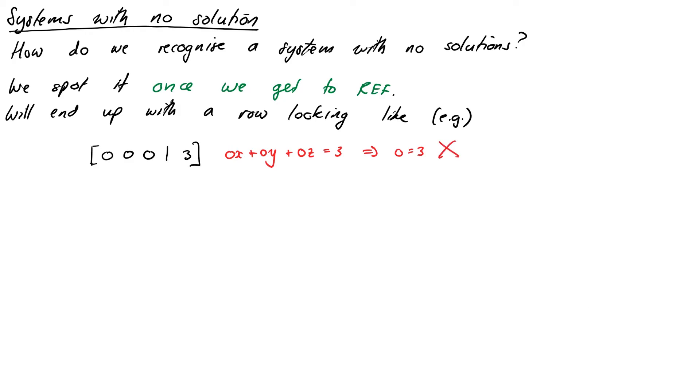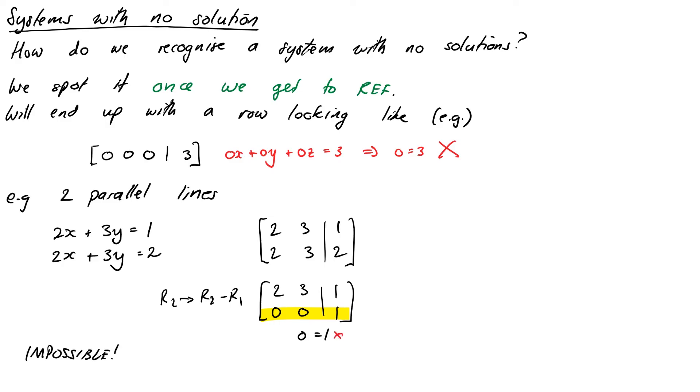So maybe we'll look at one that we understand. Let's look at an example in 2D of two parallel lines. So 2x plus 3y equals 1 and 2x plus 3y equals 2. Those are both lines. They're both parallel. And we can write that down as an augmented matrix as 2, 3, 1; 2, 3, 2. So if we go ahead and do our Gaussian elimination, we get row 2 goes to row 2 minus row 1, which gives us 2, 3, 1. First row doesn't change. And the second row becomes 0, 0, 1. We can see that the last equation gives us something absolutely impossible. So we can see that our system has no solutions.